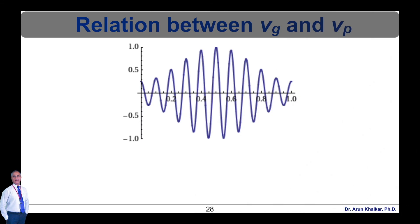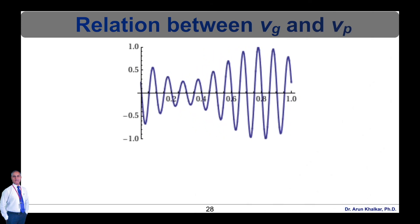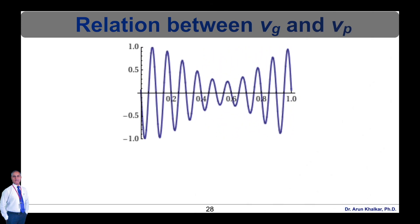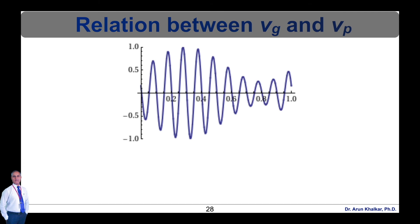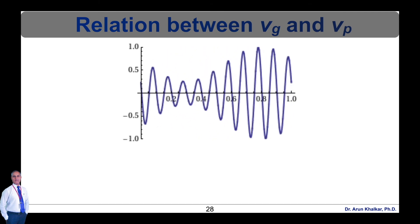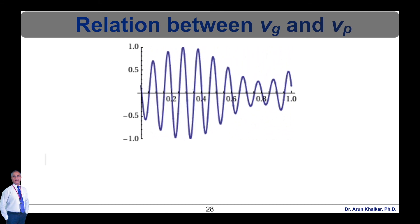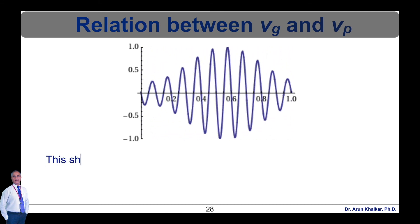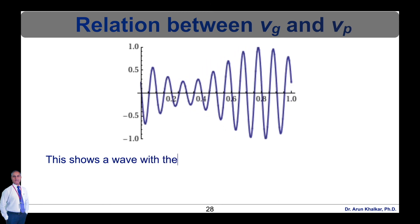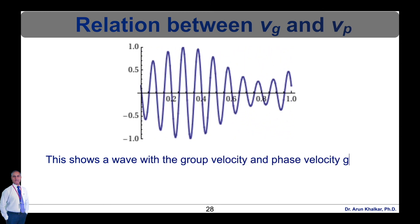This animated figure shows a wave with group velocity and phase velocity going in different directions. The group velocity is positive while the phase velocity is negative.